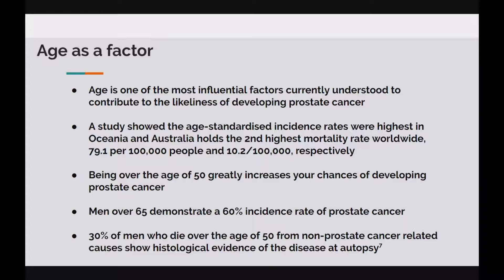Prostate cancer also has a substantial impact on a global scale. It is the fifth leading cause of death worldwide with approximately 1,276,106 new cases reported in 2018. There is a greater prevalence of disease in developed countries, which may be due to greater access to healthcare systems leading to successful diagnoses such as PSA testing. African-American men have higher incidence rates and more aggressive types of prostate cancer compared to white men. The age-standardized incidence rates were highest in Oceania at 71.9 per 100,000 people, and Australia held the second-highest mortality rate at 10.2 per 100,000 people. Age is thought to be the most influential factor, with an associated incidence rate of 60% in men over 65, and almost 30% of men who die over the age of 50 for other causes have shown histological evidence of the disease at autopsy.